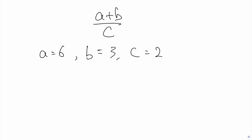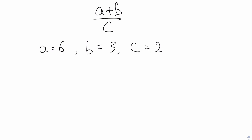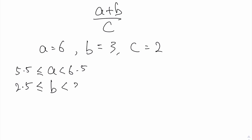The first step is always to write down the upper and lower bounds of the individual variables. So a is between 5.5 and 6.5, b is between 2.5 and 3.5, and for c you have 1.5 and 2.5.